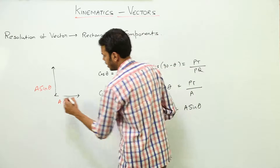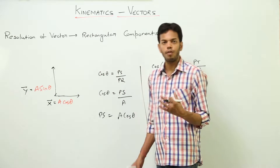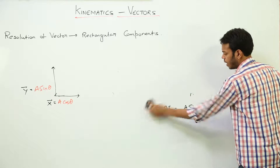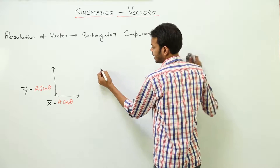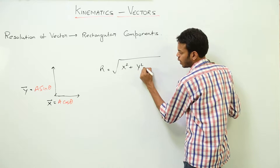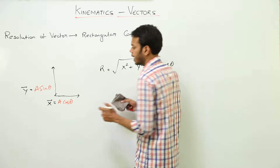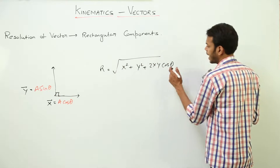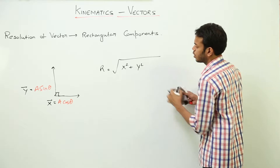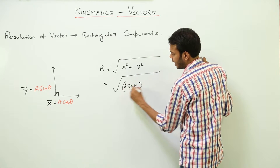Let's say this vector is vector X and this vector is vector Y. I want to find the resultant of vectors X and Y. The formula for resultant is the square root of X² + Y² + 2XY·cos(theta), where theta is the angle between vector X and vector Y. At this time the angle between them is 90 degrees, and cos(90°) = 0, so the last term becomes zero, leaving us with the square root of X² + Y².